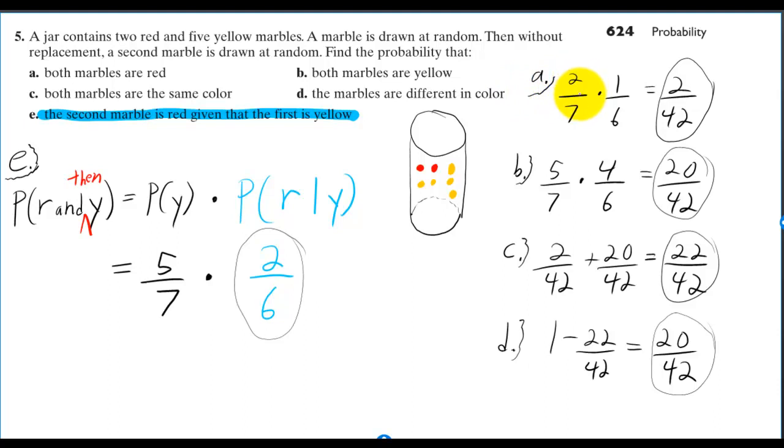There's two red marbles out of the seven marbles. Then when you've already chosen one, there's one left out of the six. And you multiply those two probabilities.